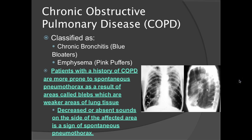Now we're going to look at chronic obstructive pulmonary disease, or COPD. This can be classified as chronic bronchitis — lovingly referred to as blue bloaters — and emphysema, the pink puffers, who'll have almost a cherry red tinge to their skin. Patients with a history of COPD are more prone to spontaneous pneumothorax as a result of areas called blebs, which are weaker areas of lung tissue. Decreased or absent sounds on one side is a sign of spontaneous pneumothorax. You could also see subcutaneous emphysema — the little air bubbles under the skin in the subclavian area or side of the neck on the affected side.